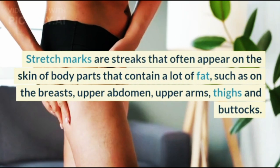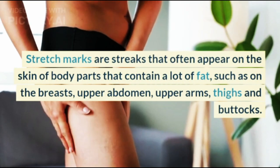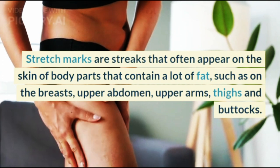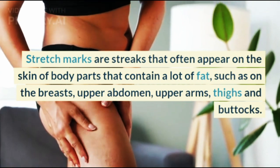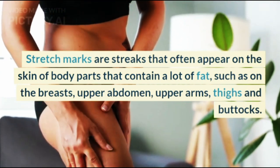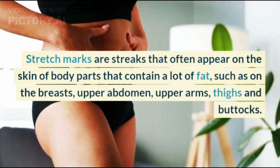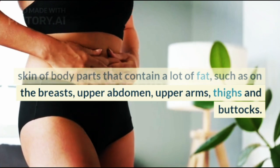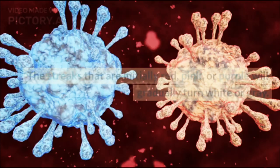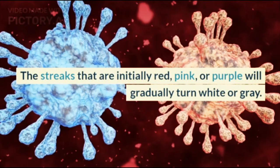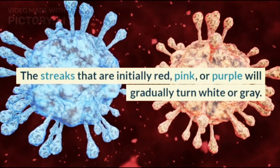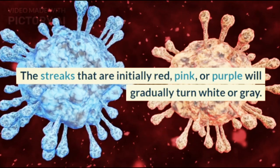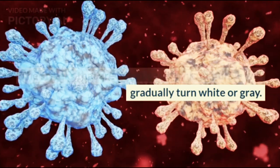Stretch marks are streaks that often appear on the skin of body parts that contain a lot of fat, such as on the breasts, upper abdomen, upper arms, thighs, and buttocks. The streaks that are initially red, pink, or purple will gradually turn white or gray.